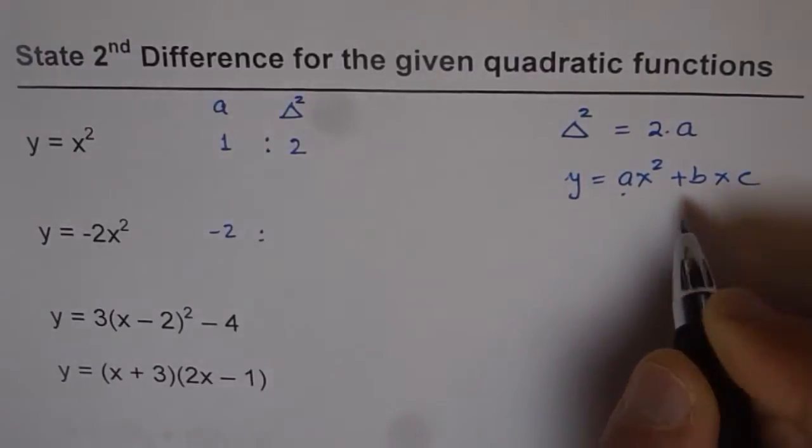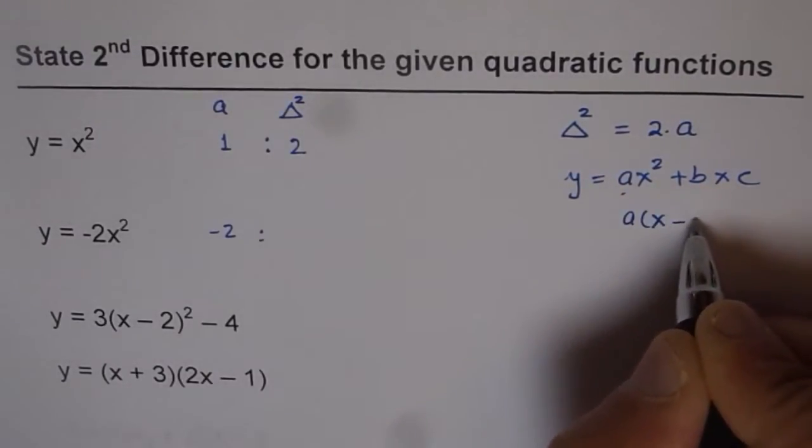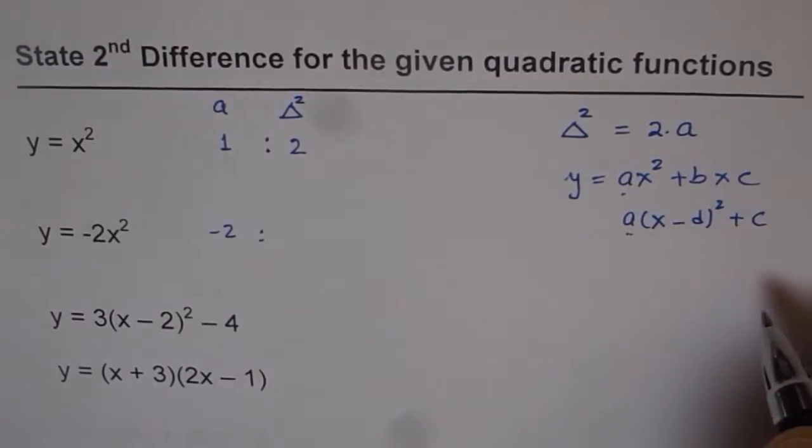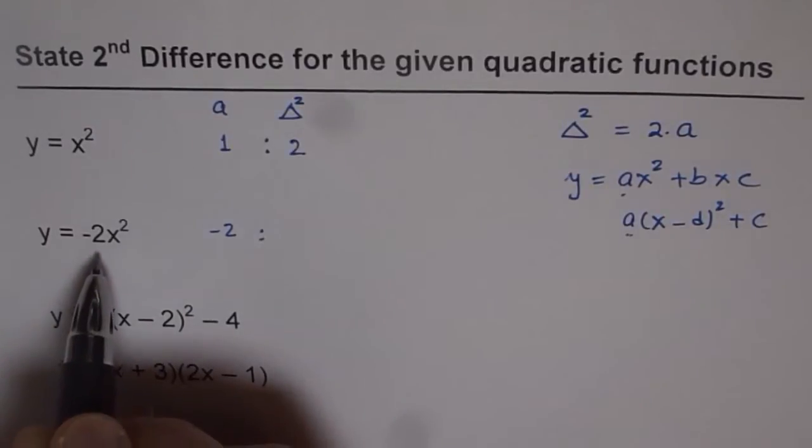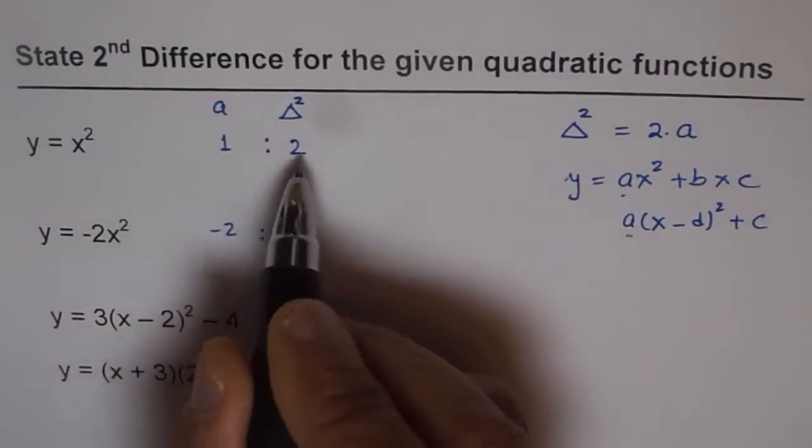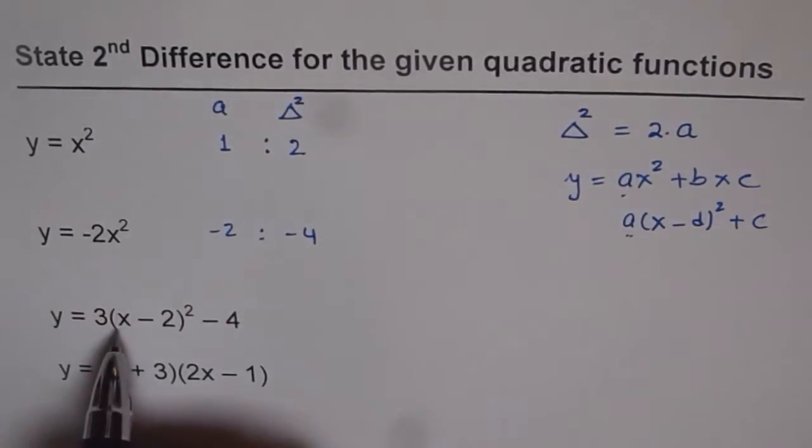Or if I write the function as a times x minus d whole square plus c, then that a value, the leading coefficient. So leading coefficient here is minus 2 and the second difference will be 2 times minus 2, which is minus 4.